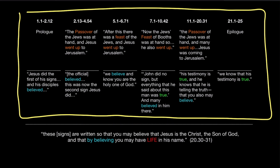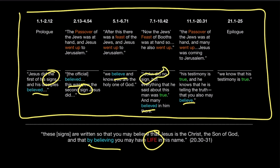The goal is for the reader to have life, and that life comes by believing. Each of the sections closes climactically with people coming to believe or stating their belief in Jesus — in the first half, in response to signs, and in the second half, not to signs, but because of the truth of the things that were witnessed and spoken.